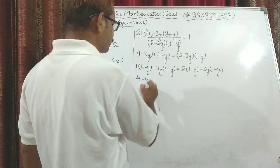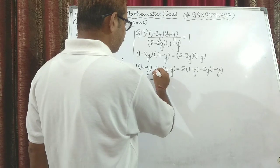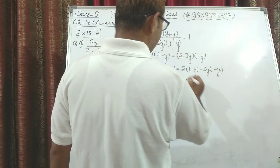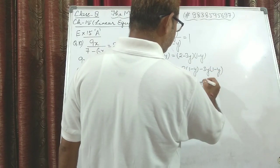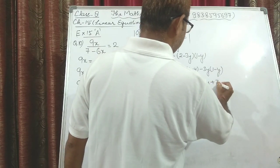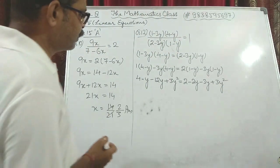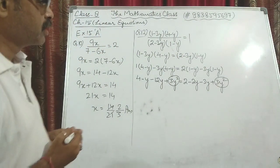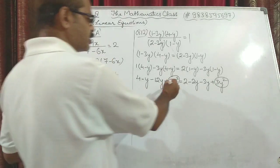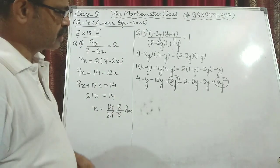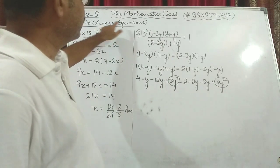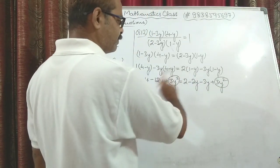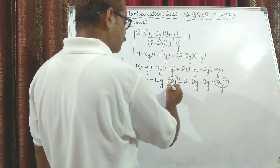Opening all brackets: 4 − y − 12y + 3y² = 2 − 2y − 3y + 3y². We now have 3y² on both sides. Since this would make it a quadratic equation — which is not in the syllabus — these squared terms must cancel. Both 3y² terms are positive, so moving one to the other side makes them cancel.